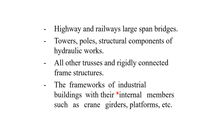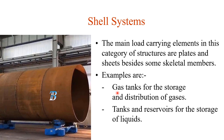The second type is the shell system. The main load-carrying elements are plates and shells, besides some skeletal elements. Sometimes skeletal members are also introduced, but the main element is the shell. Examples include gas tanks for storage and distribution of gases, tanks and reservoirs for storage of liquid — you may have seen overhead water tanks made of steel installed at different locations.